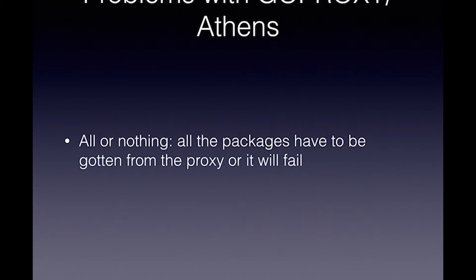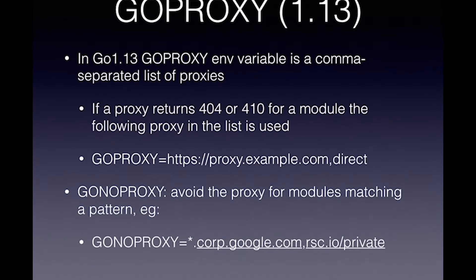The main problem with Go Proxy and Athens is that at the moment Go Proxy is just one variable — it only has one value you can set. So you can set it to direct or to the proxy, that's the only thing you can do. This basically means if any of your packages cannot be found in Athens, it will fail the build — and that's a bad thing. To fix that in Go 1.13, which is out next month — the first release candidate actually came out today or yesterday — that environment variable will be a comma-separated list which it will try one after the other, and if there's a 404 or 410 for any package it will try the next one.